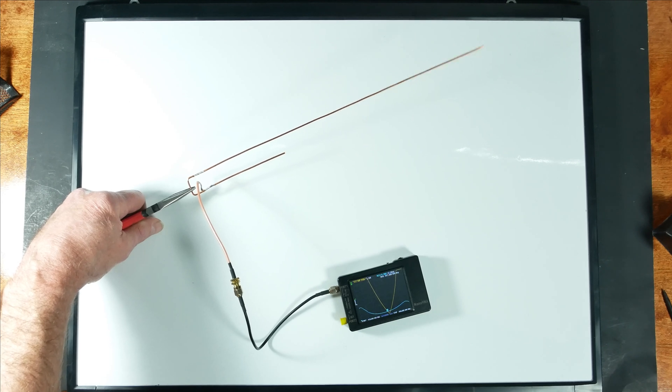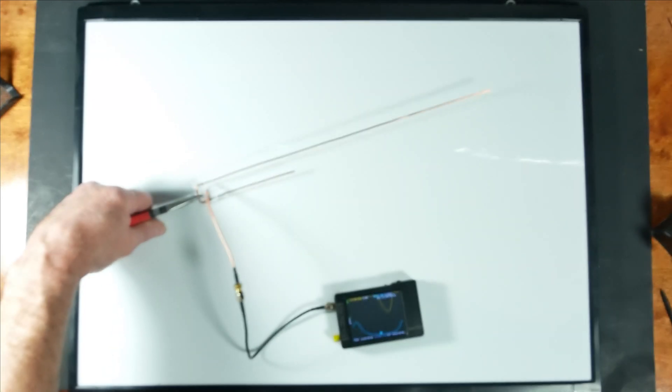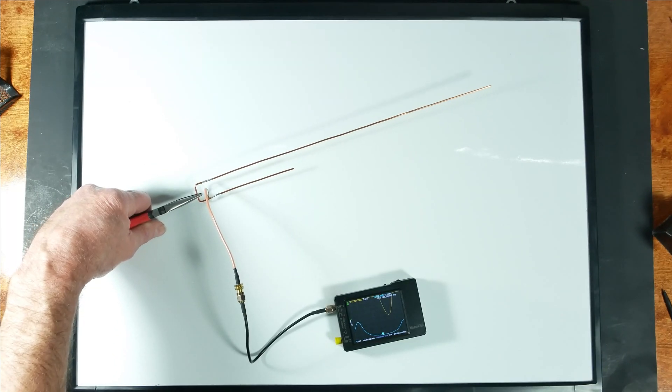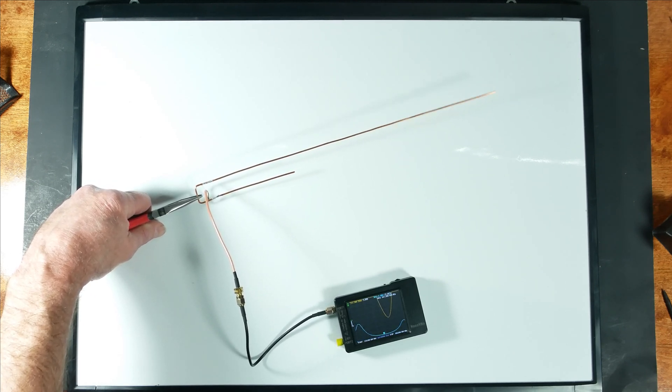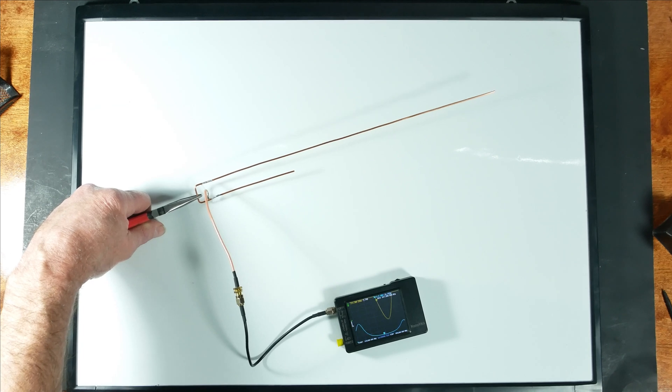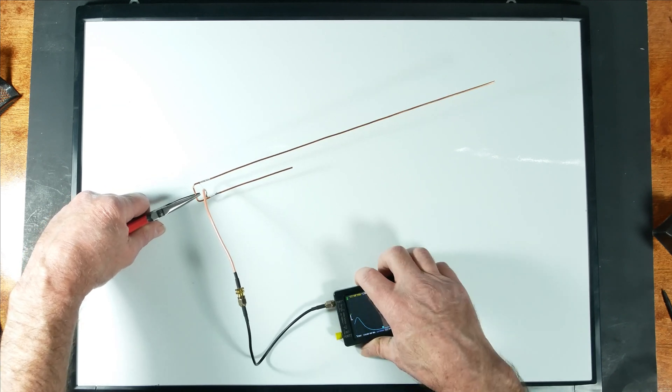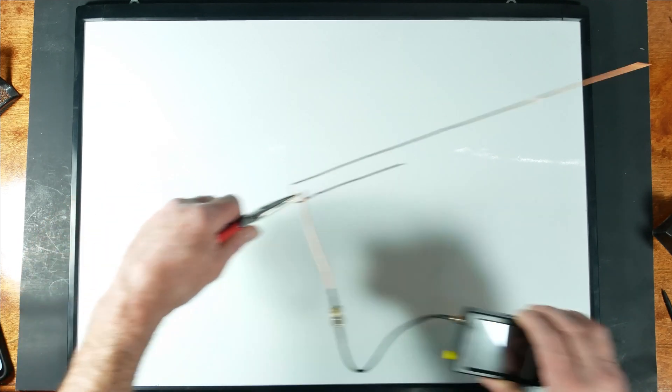So in order to understand how this is working, we're going to have to talk a little bit about quarter wavelength stubs and how they apply to antennas in the building of antennas. But before we even do that, we're going to have to talk about AC a little bit.